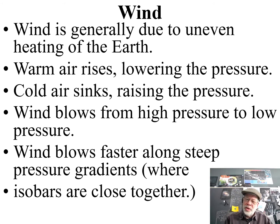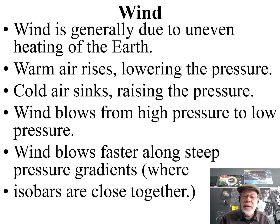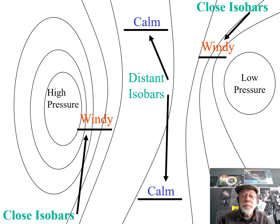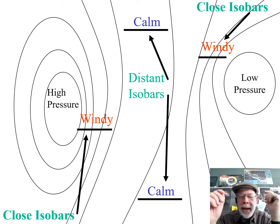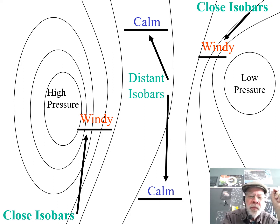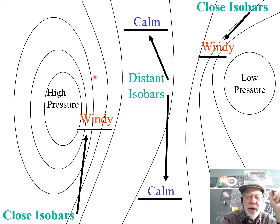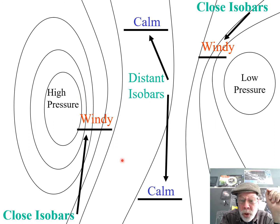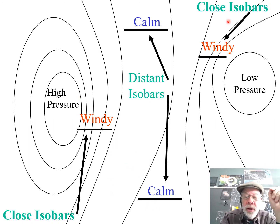That's where the isobars — when you're looking at an isobar map, wherever the isobars are close together, that's where you'll get the wind. So this would look like a weather map, and you can see areas of high pressure and low pressure. Where you have isobars very close together, like in this area here, you'd have strong winds.